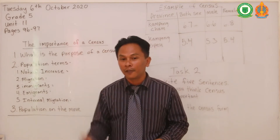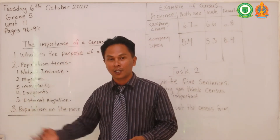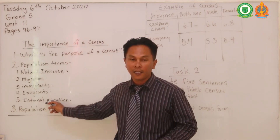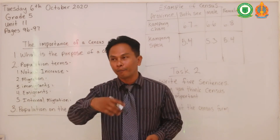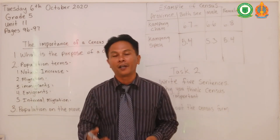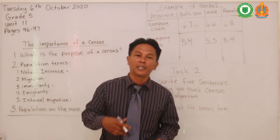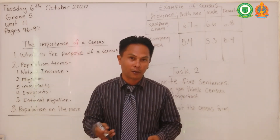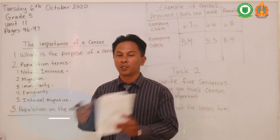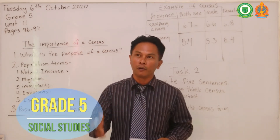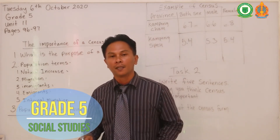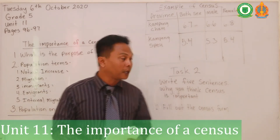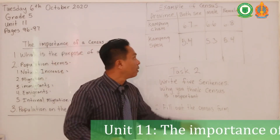Number four, emigrants: emigrants are people who have left their country to live in another country. So the person who left Cambodia to go to France is called an emigrant from Cambodia. Number five, internal migration: that's movement within your state, town, city, or province — not from one country to another. For example, moving from Battambang to Phnom Penh — that's internal migration.